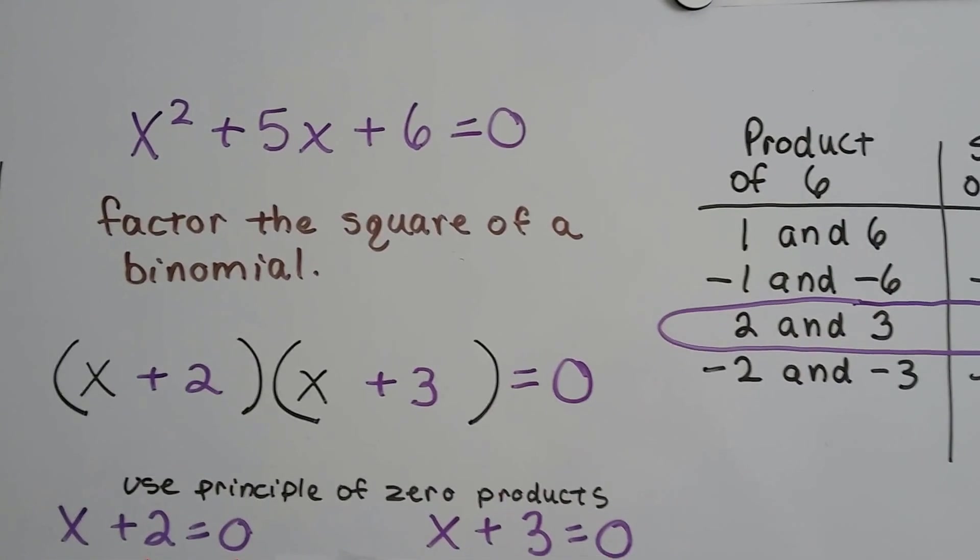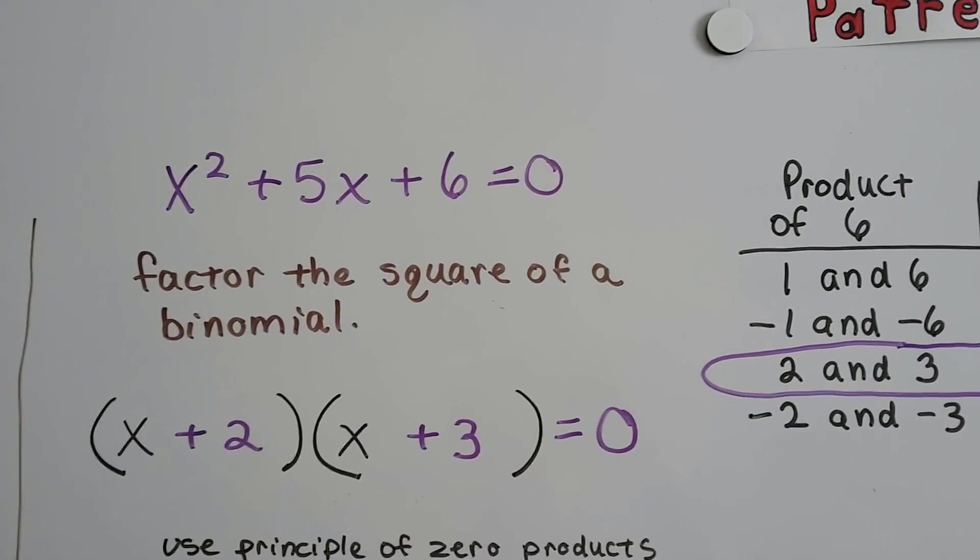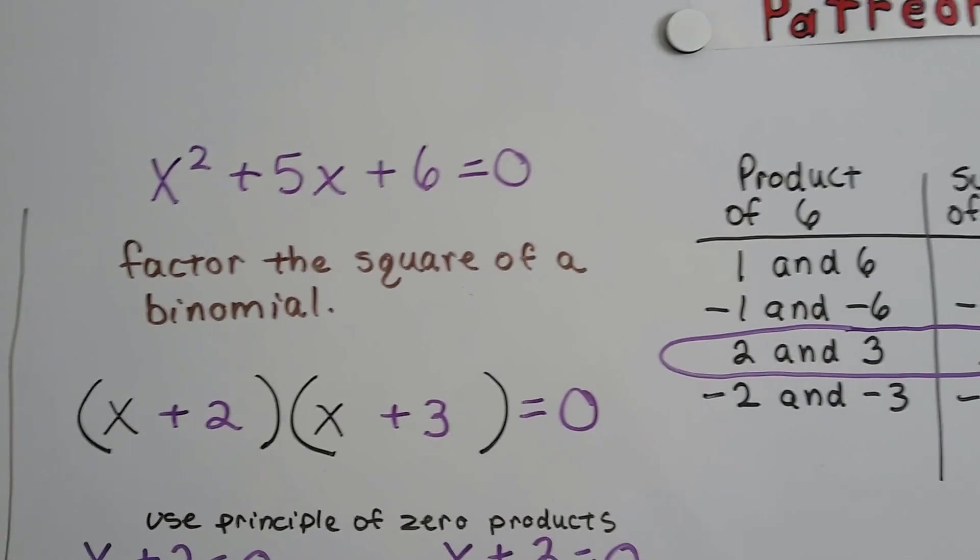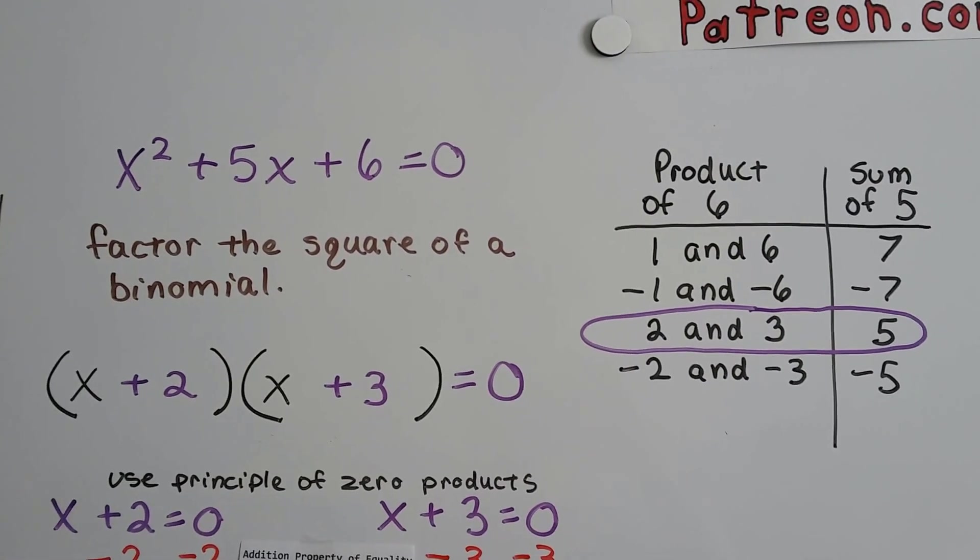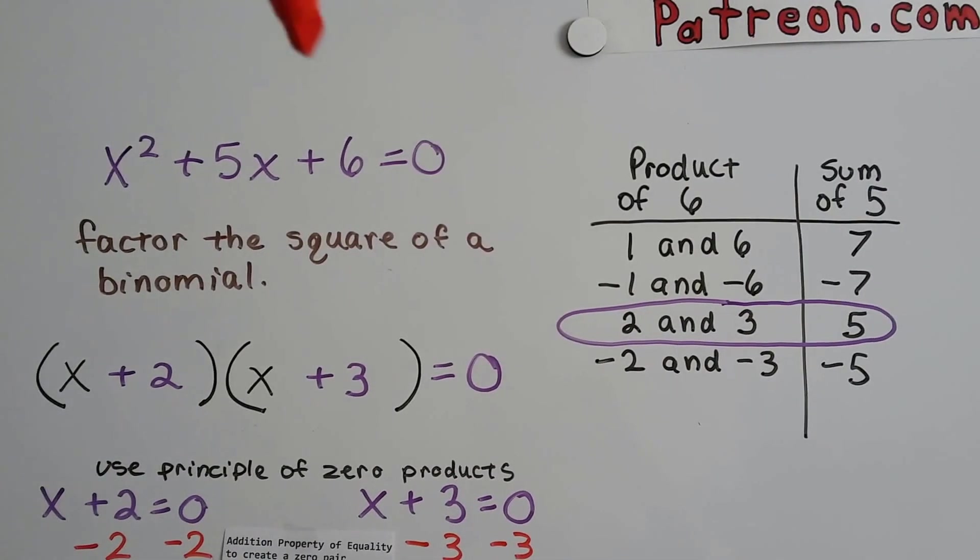I've got x squared plus 5x plus 6 equals 0. So this polynomial is already set to equal 0, so we're okay. So we can factor the square of a binomial. We make a factoring table.